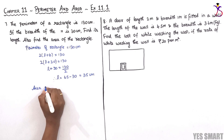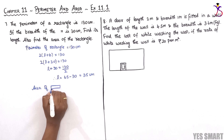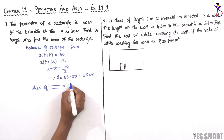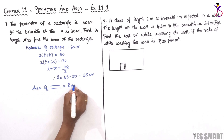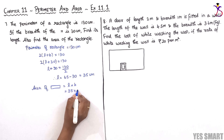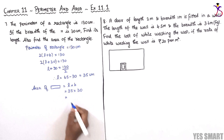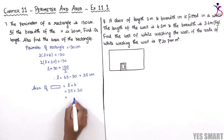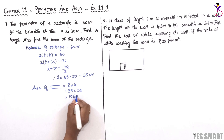Area of rectangle equals length into breadth, that is 35 into 30, which equals 1,050 centimeter square.